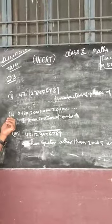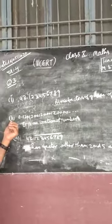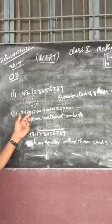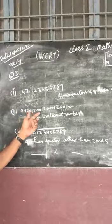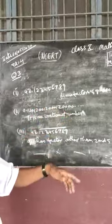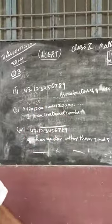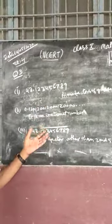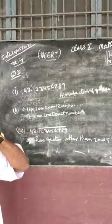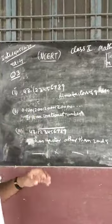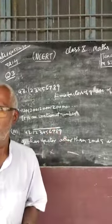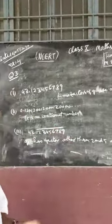In part 2, the number is 0.1001000100001… where zeros keep increasing after each 1. So it is an irrational number and cannot be represented in the form p by q.